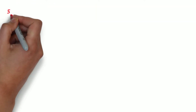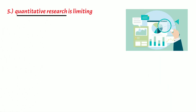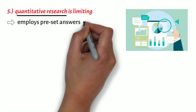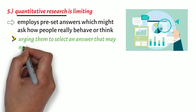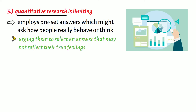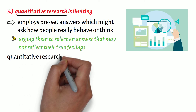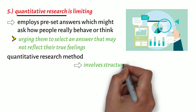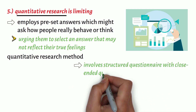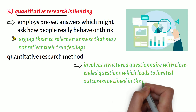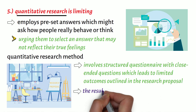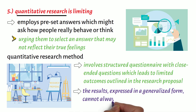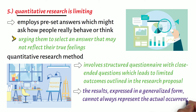Fifth, quantitative research employs pre-set answers which might ask how people really behave or think, urging them to select an answer that may not reflect their true feelings. Also, quantitative research method involves structured questionnaires with close-ended questions, which leads to limited outcomes outlined in the research proposal. In this way, the results, expressed in a generalised form, cannot always represent the actual occurrence or phenomenon.